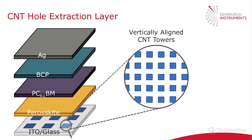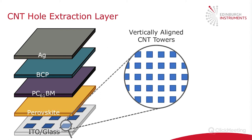The perovskite stack we're going to examine under the RMS1000 consists of ITO glass with islands of carbon nanotubes patterned onto it — each blue square is composed of smaller squares of carbon nanotube islands. The perovskite layer is deposited on top, and the carbon nanotubes act as the hole extraction layer to get holes generated in the perovskite into the ITO glass as efficiently as possible. The rest of the stack deals with electrons: PC61BM as the electron extraction layer, BCP as a blocking layer, and a silver electrode.